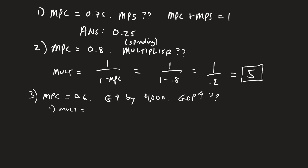The first step is to find the multiplier. So the multiplier equals 1 divided by 1 minus 0.6, which equals 1 over 0.4, which equals 2.5.